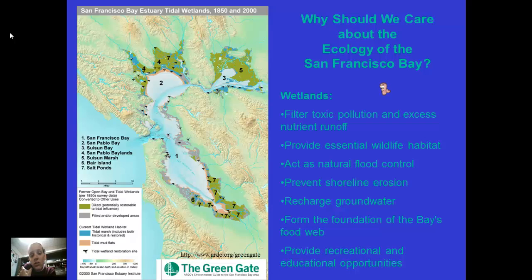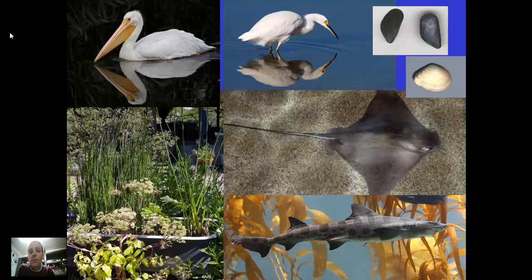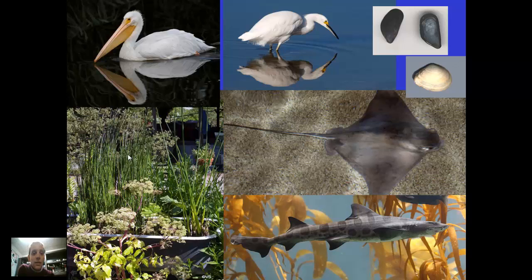The wetlands also provide recreational and educational opportunities. There is a lot of fishing that can be done in the wetlands, and there is quite a bit to learn about them. Here are images of different organisms we find in the San Francisco Bay area: pelicans, egrets, mussels, clams, stingrays, and this is a leopard shark. These are also some of the plants found in the San Francisco Bay wetlands.